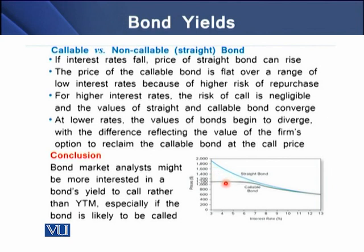If interest rates are higher, the risk of call is negligible and the values of both straight and callable bonds converge with each other — that is the convergence area shown in the picture. But at lower rates of interest the values begin to diverge, as seen when interest rates fall from 13% toward 3%, which is the divergence area.